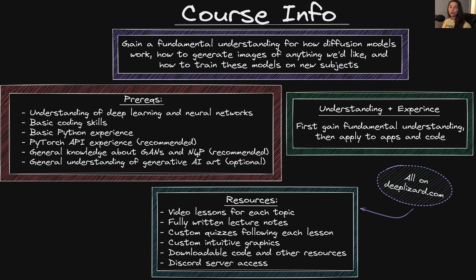Throughout the course, we will be encountering some text preprocessing as well as making use of what are called word embeddings. We'll additionally draw comparisons to other generative models like GANs. It's fine if you're not totally familiar with these topics, as it's not strictly required. If you would like a better understanding beforehand, you can check out our Intro to GANs course as well as our Natural Language Processing intro course. In the NLP course, you'll be exposed to text preprocessing and word embeddings, which we'll be making use of here in this Diffusion Models course.